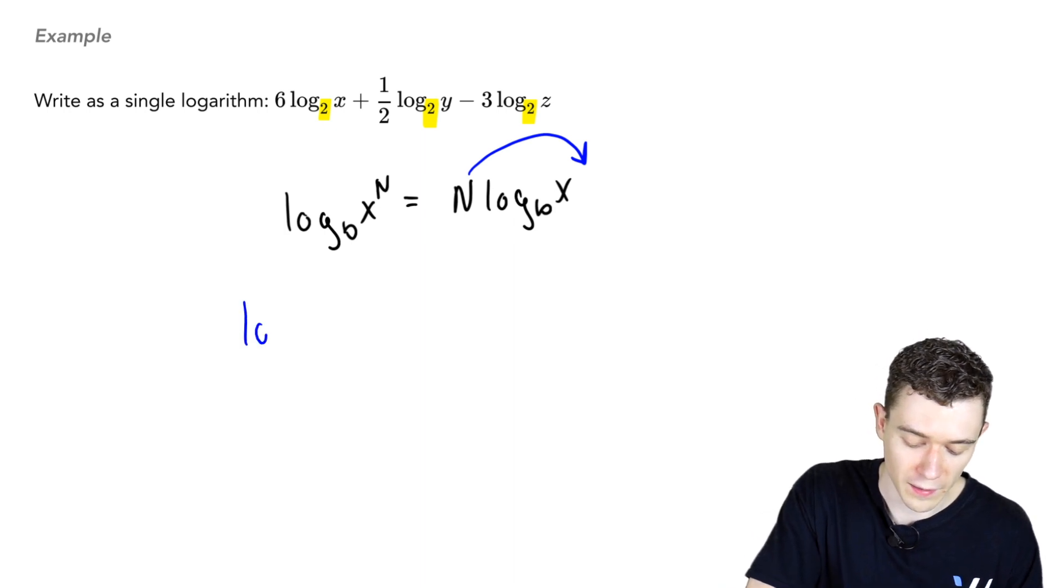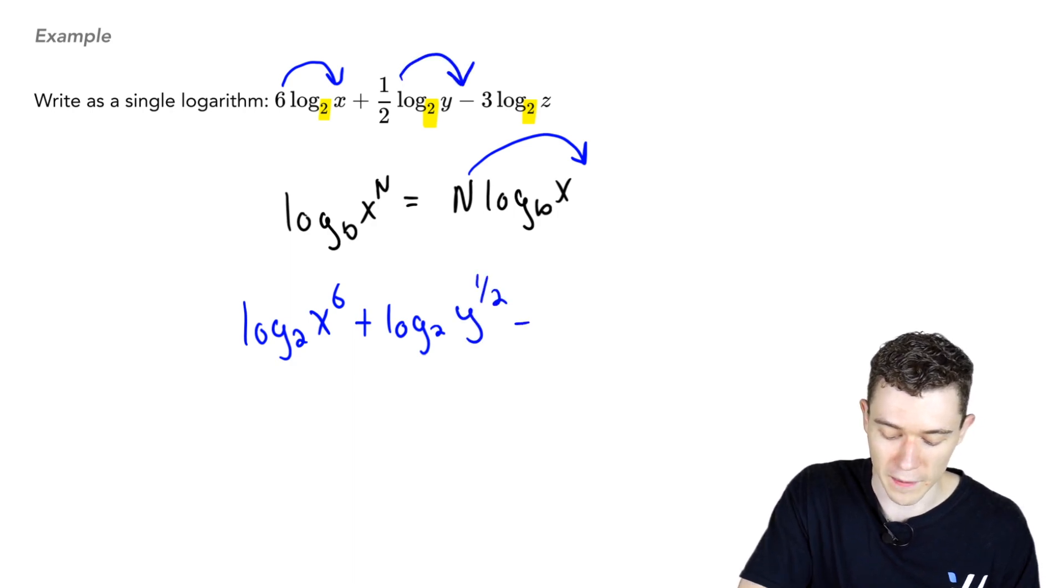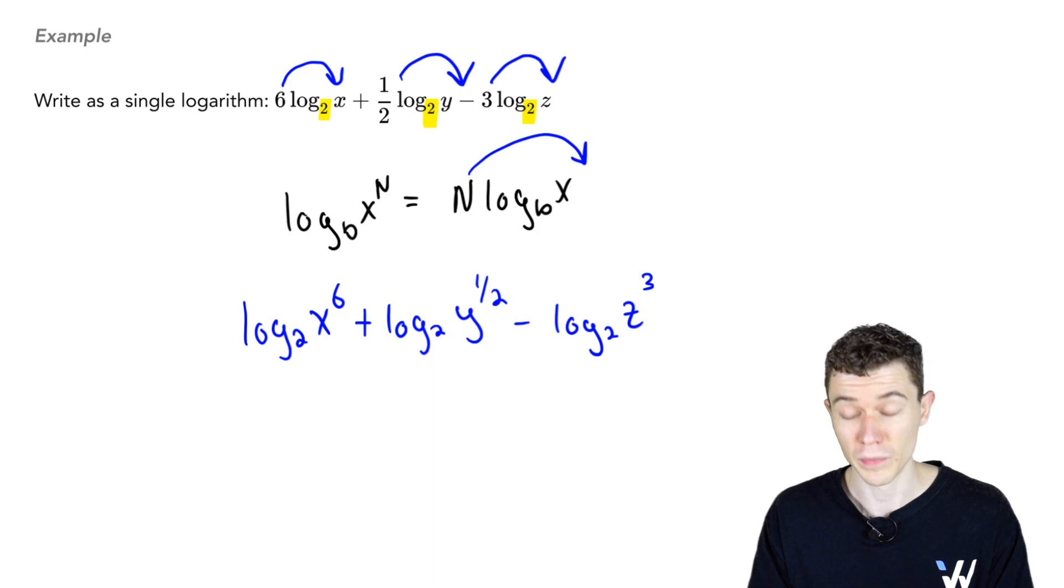In this case, we're going to bring the power up. So, our expression will now say log base 2 of x to the 6th. Imagine bringing the 6th upstairs. This will say log base 2 of y to the 1 half. Bring the 1 half upstairs. And then minus log base 2 of z cubed. Bring the 3 upstairs. So, we're getting close. We only have to do one more thing.